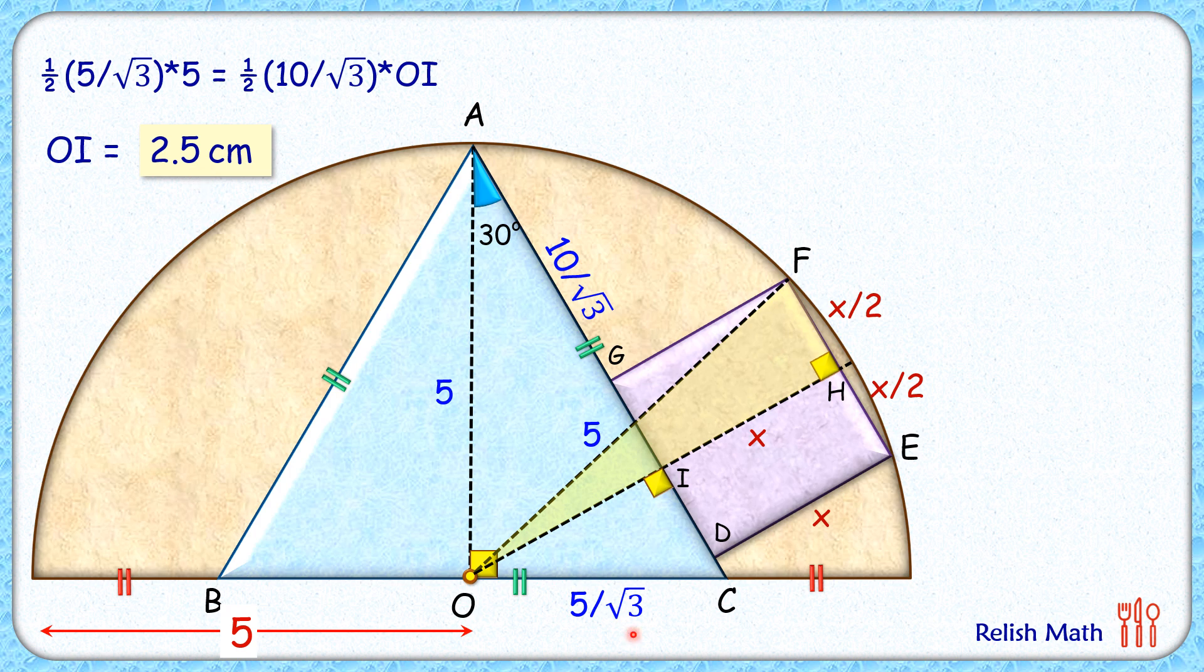So this equals half of 10 by root 3 times OI. Simplifying it, we'll get OI length as 2.5. Now applying the Pythagorean theorem in this triangle, we'll get x plus 5 by 2 whole square plus x by 2 whole square equals hypotenuse square, which is 5 square.